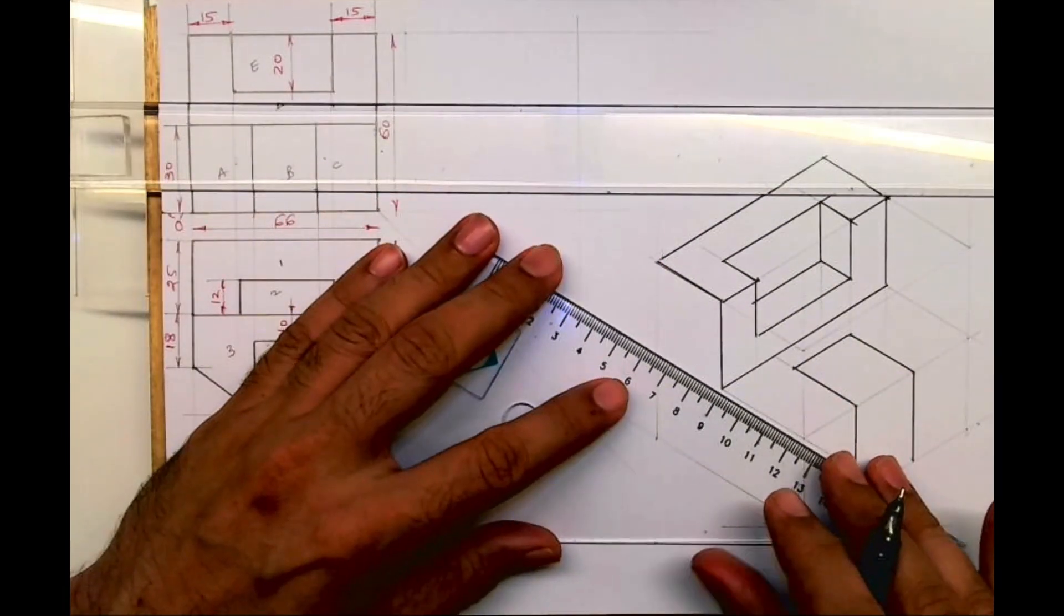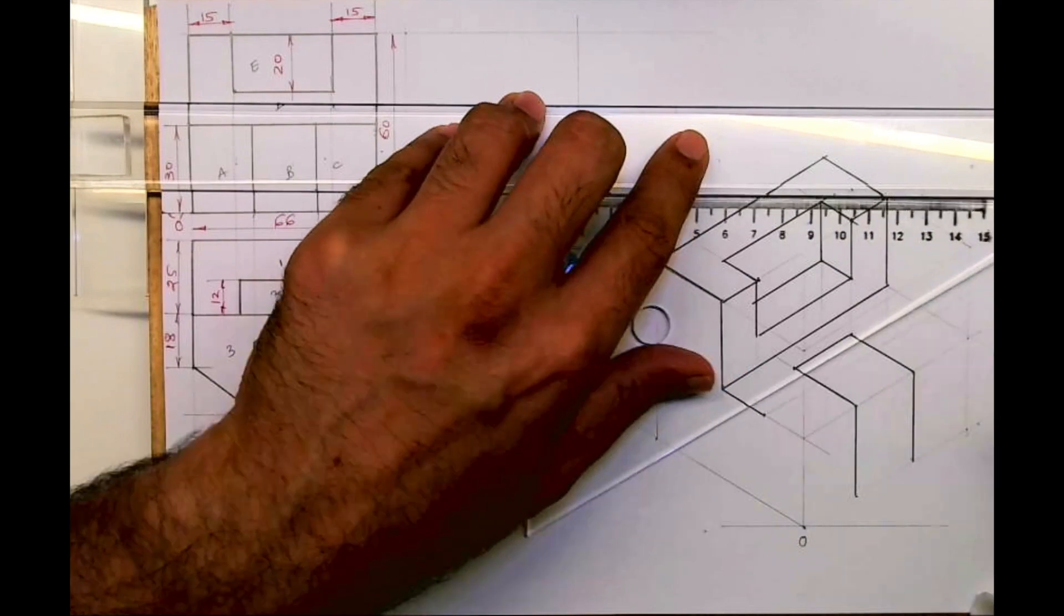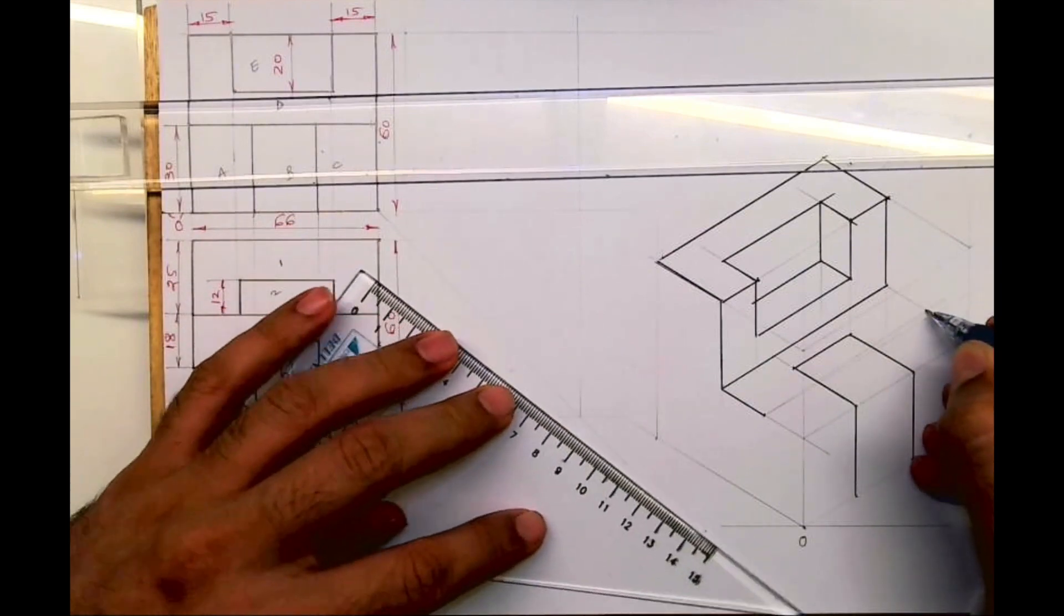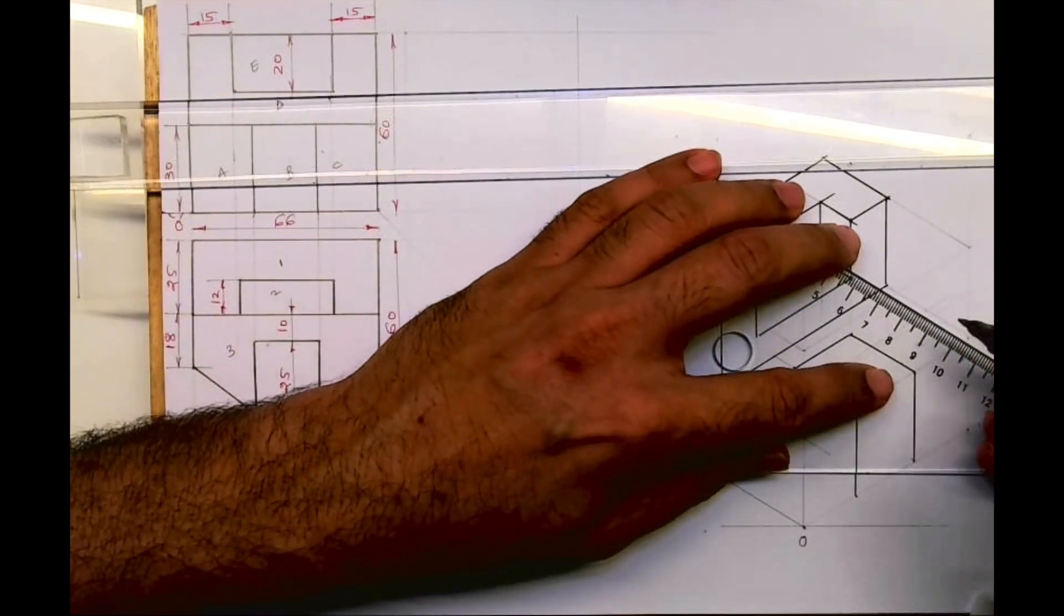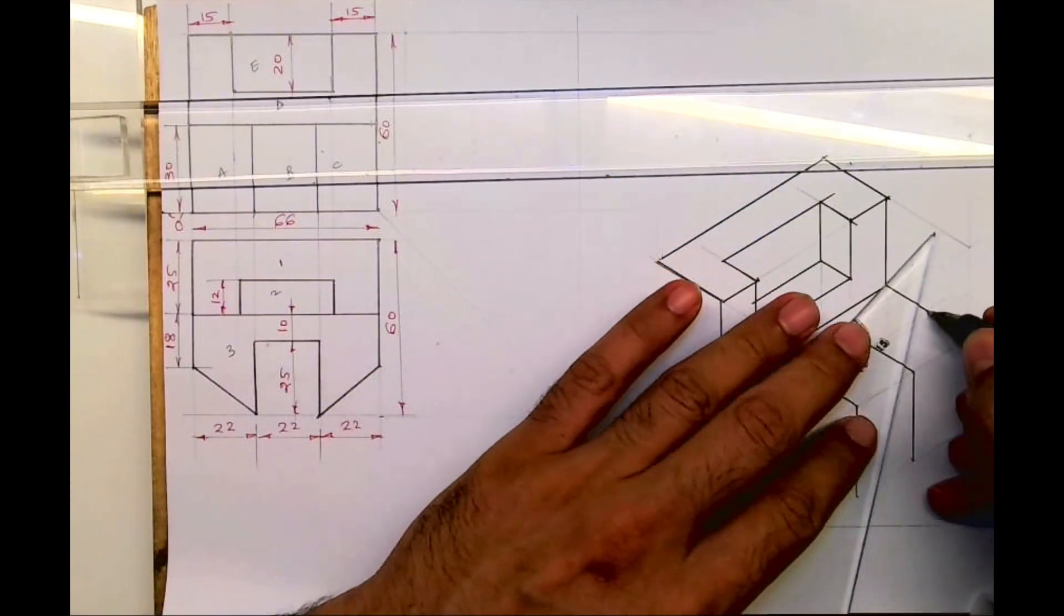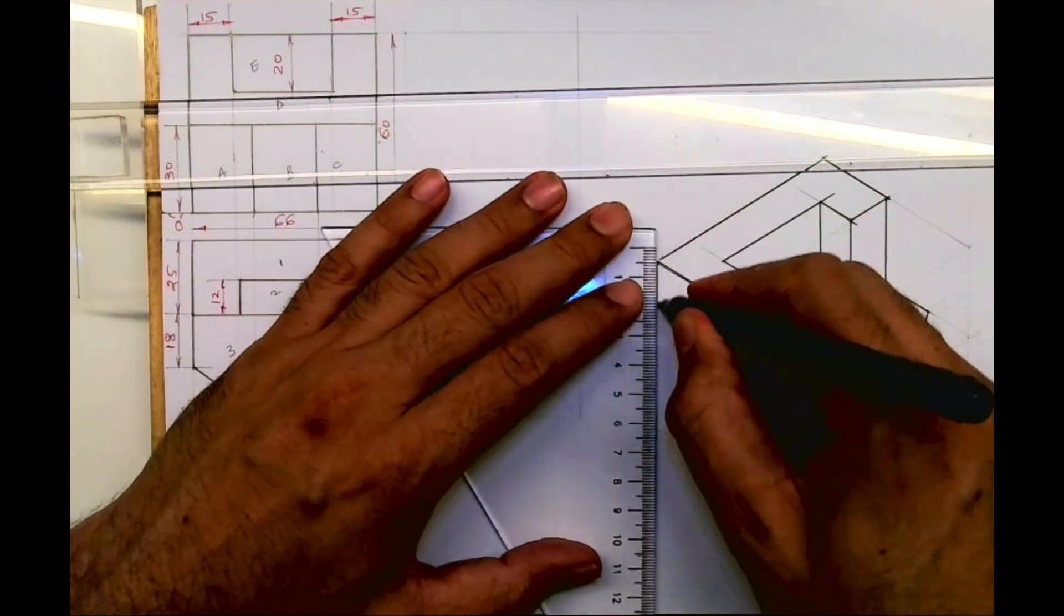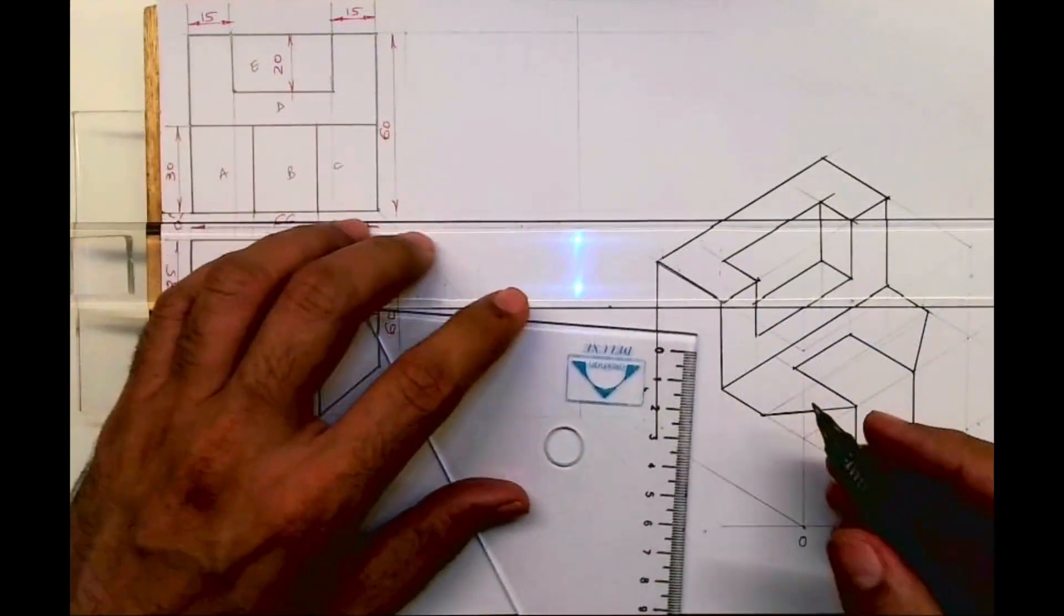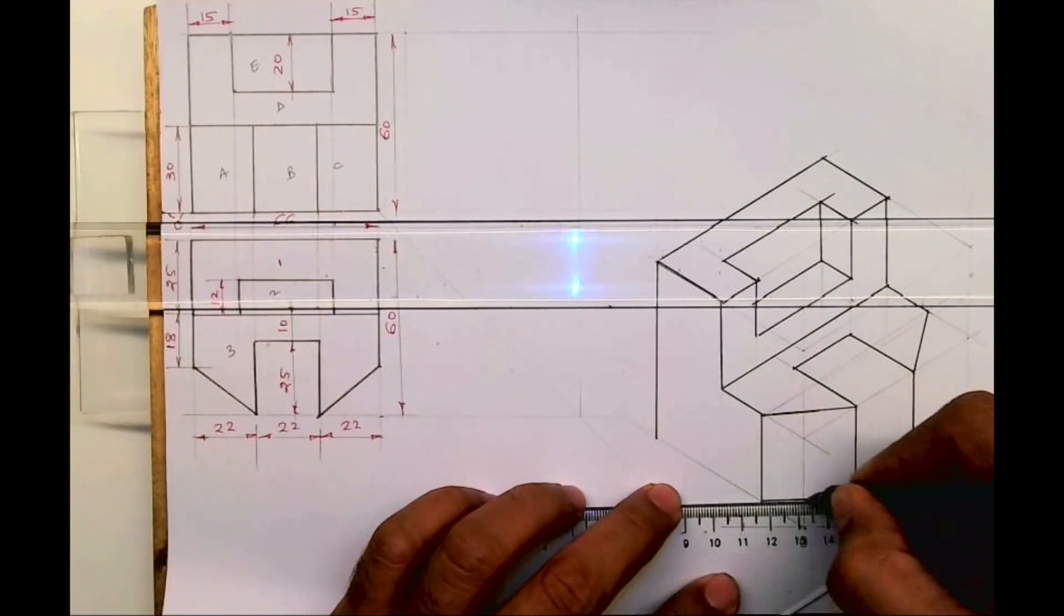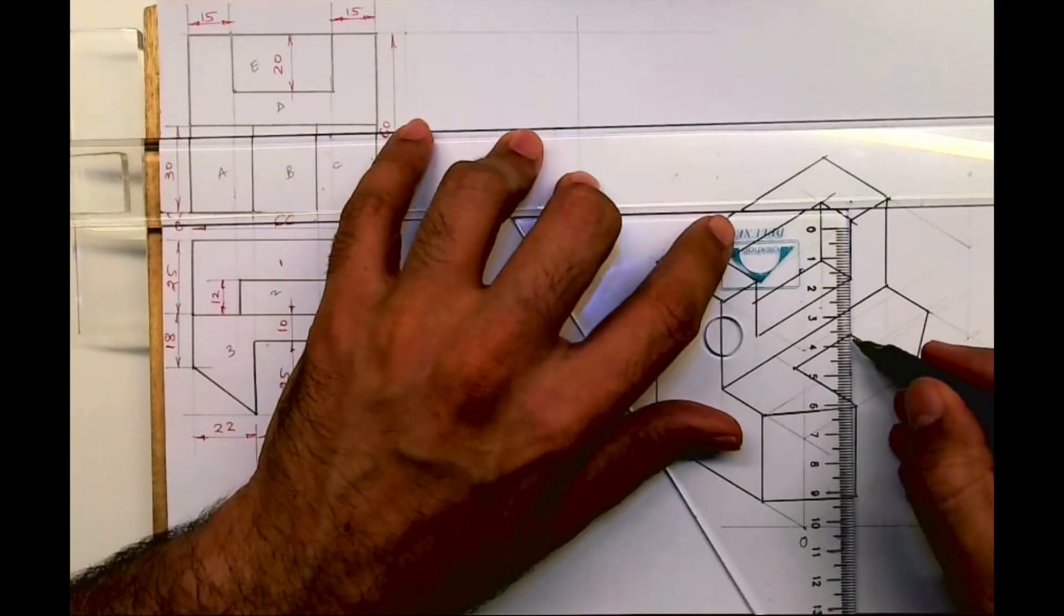This is 18. I'll draw vertical from here. See this, so this part is done.